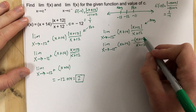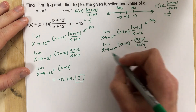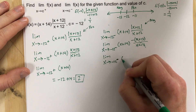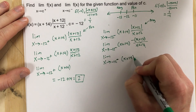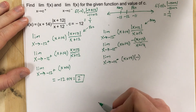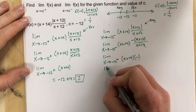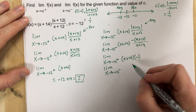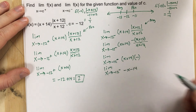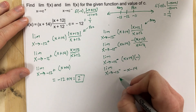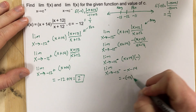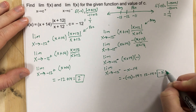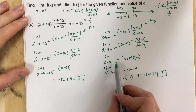On the left-hand side, the x plus 12 terms cancel as well, leaving negative 1. So we have the limit as x approaches negative 12 from the left of x plus 14 times negative 1. Distributing, that's the limit of negative x minus 14, which equals negative of negative 12 minus 14, giving us 12 minus 14, which is negative 2. The limit as x approaches negative 12 from the left is negative 2.